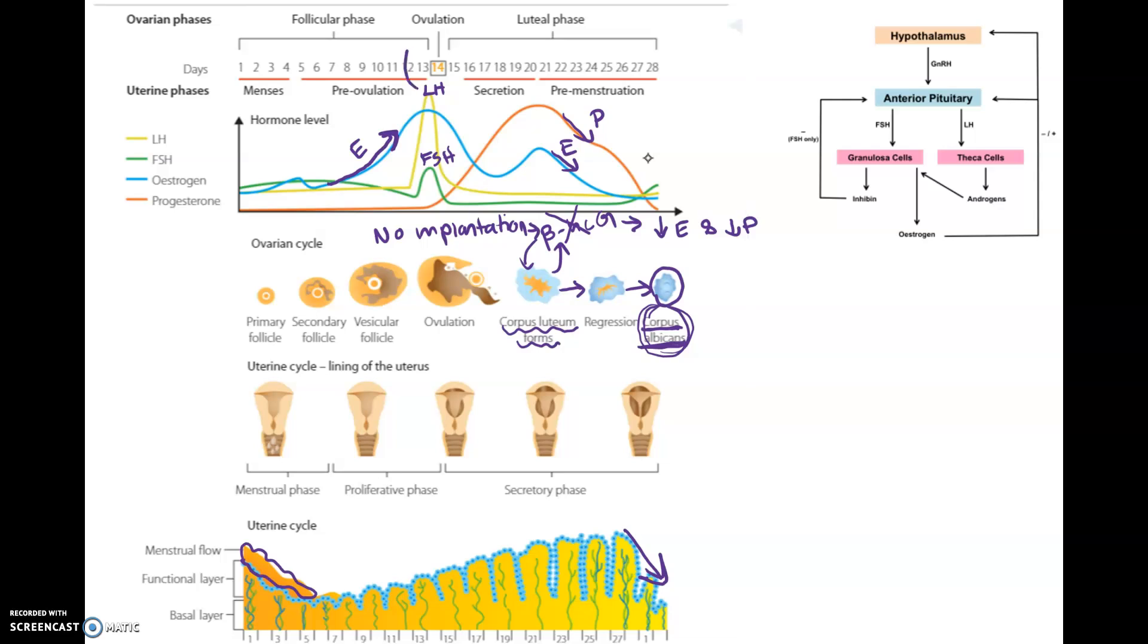LH, you should remember, is responsible for ovulation. Since implantation doesn't normally occur, you don't have release of beta-HCG, and you will thus see a drop in estrogen and progesterone. That will mark the next reproductive cycle. That's a conclusion of a very high-yield question which is explaining and identifying the components of this reproductive hormone graph.